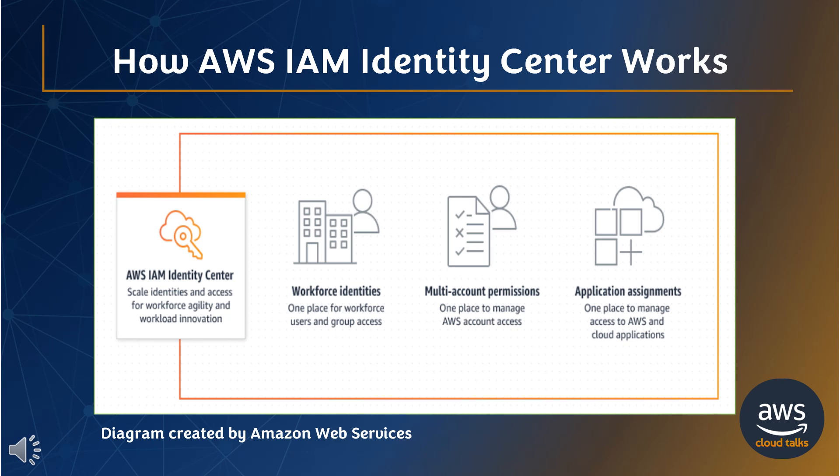Now let's see how AWS IAM Identity Center works in an application environment. AWS IAM Identity Center helps you securely create or connect your workforce identities and manage their access centrally across AWS accounts and applications. IAM Identity Center is the recommended approach for workforce authentication and authorization on AWS for organizations of any size and type. Using IAM Identity Center, you can create and manage user identities in AWS or connect your existing identity source, including Microsoft Active Directory, Okta, Ping Identity, JumpCloud, Google Workspace, and Microsoft Entra ID, formerly Azure AD.